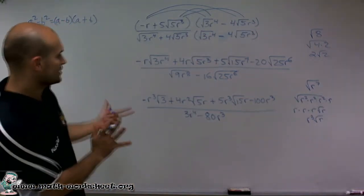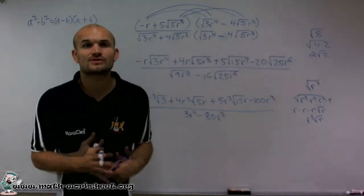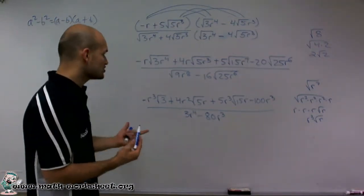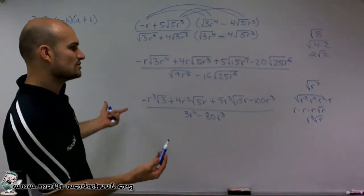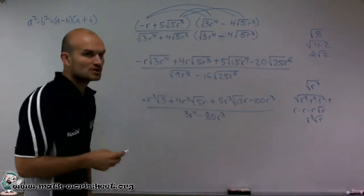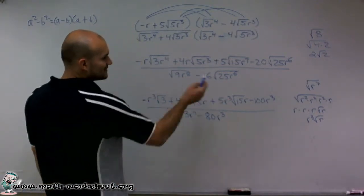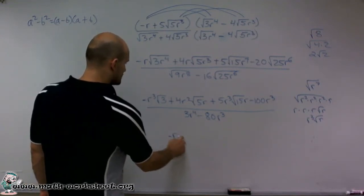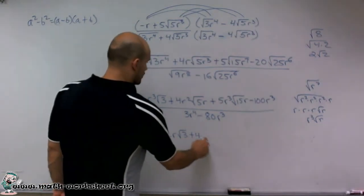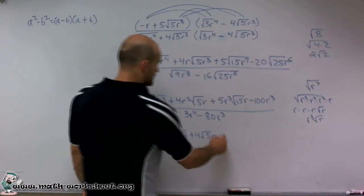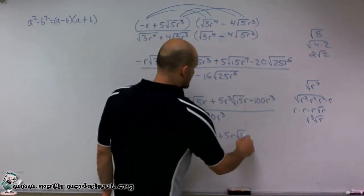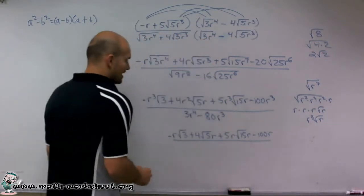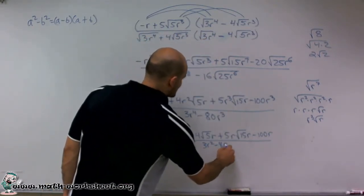Now everything's looking pretty good. But there's one last thing we can do to simplify this. These are all a multiple of r squared. They all have a redundancy of r squared. So I can take out an r squared out of each term and see what I'll be left with. When I divide out an r squared, what I'm left with is negative r times the square root of 3 plus 4 square root of 5r plus 5r square root of 15r minus 100r, all divided by 3r squared minus 80r.